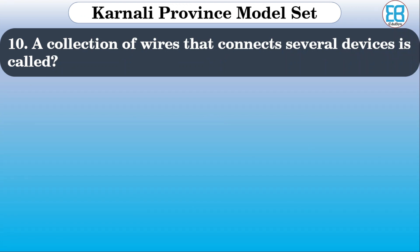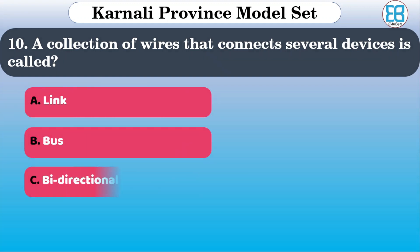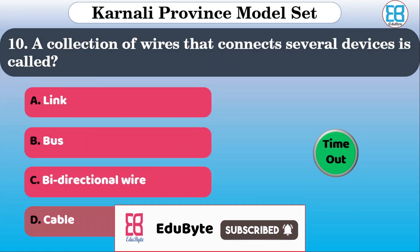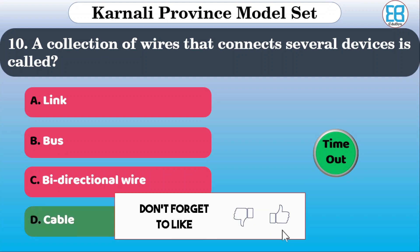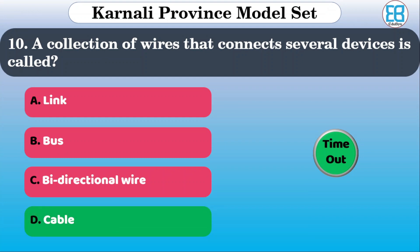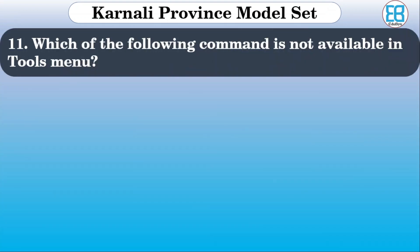A collection of wires that connects several devices is called what? The options are: link, bus, bidirectional cable. The correct option is bus.